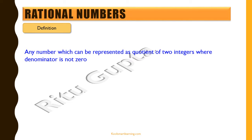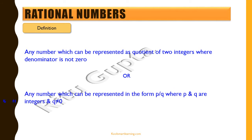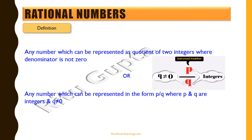Let's first try to understand what are rational numbers. Any number which can be represented as a quotient of two integers where the denominator is not zero is called a rational number. Another way of saying it would be any number which can be represented in the form of p by q, where p and q are both integers and q is not equal to zero, is a rational number.